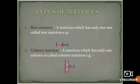Types of matrices. Row matrices: a matrix which has only one row is called a row matrix. For example, only one row. The order of the matrix is 1 by 3.